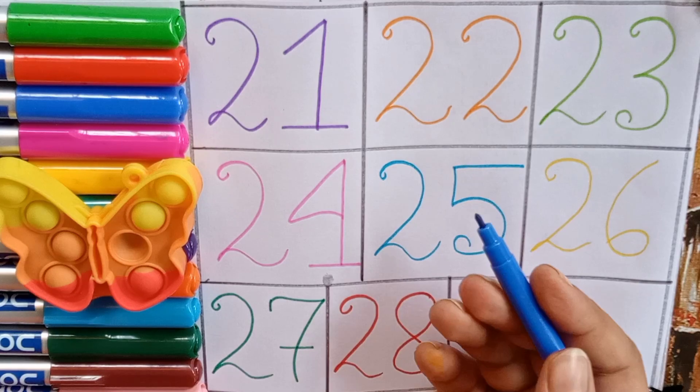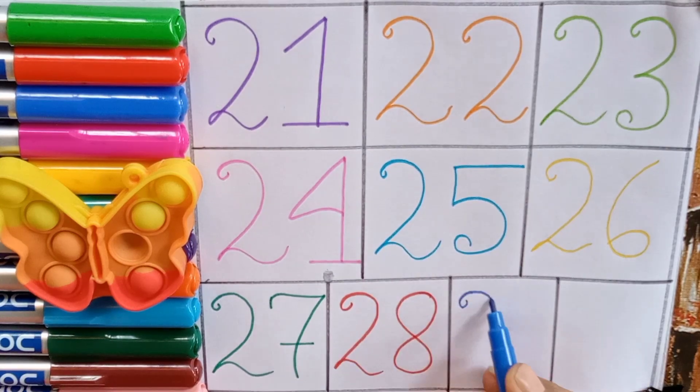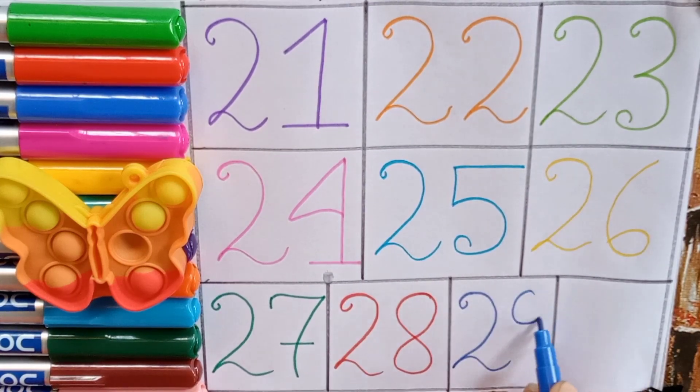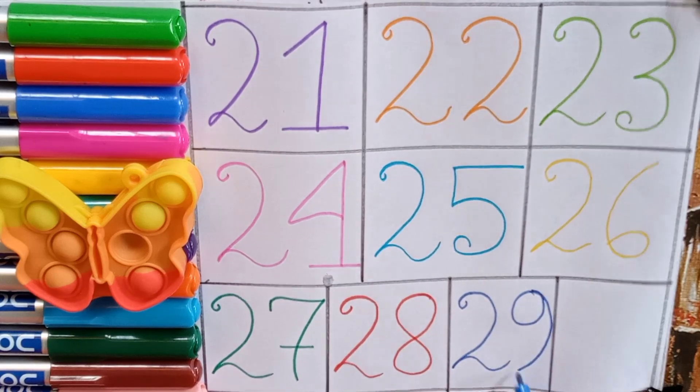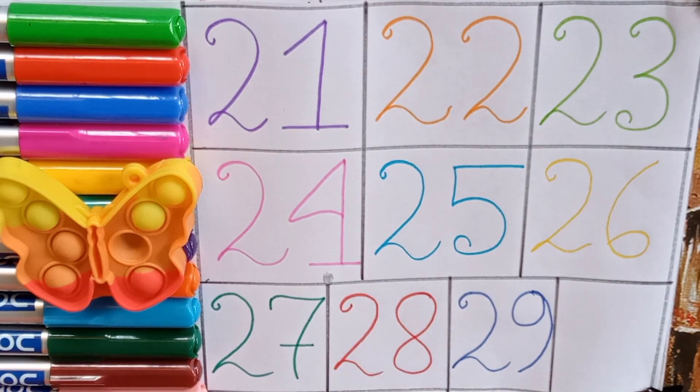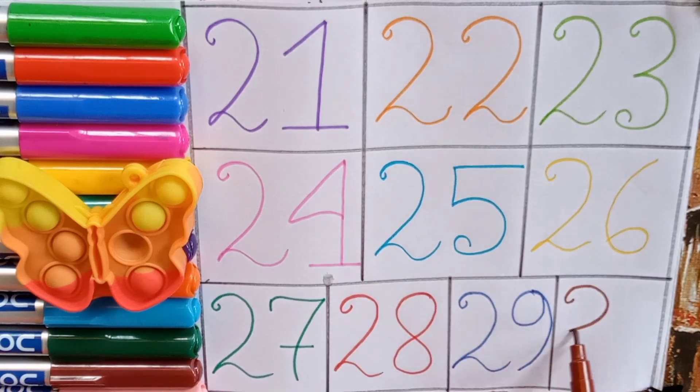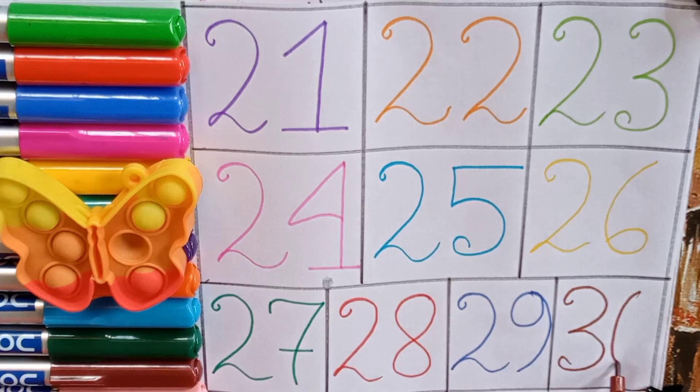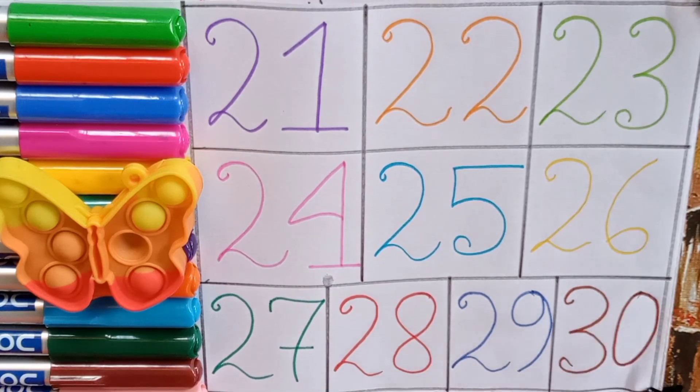Blue, two, nine, twenty-nine. Two, nine, twenty-nine. And our last color is brown. Three, zero, thirty. Three, zero, thirty.